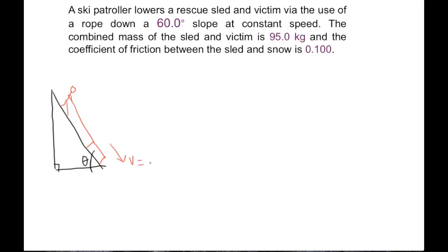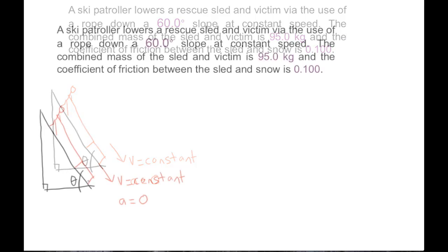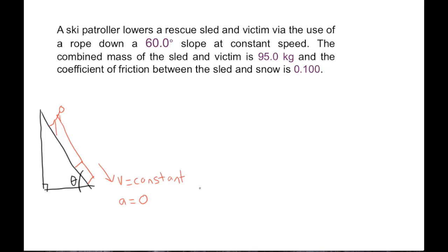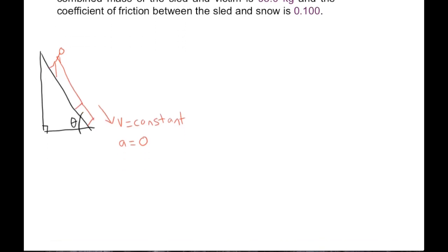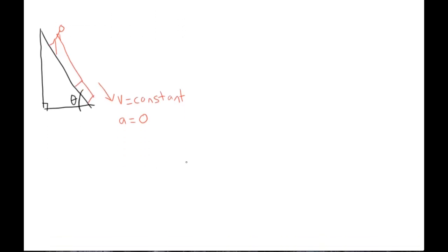The velocity is constant, which implies that our acceleration is zero. Our patroller is doing work on the rope, which is then doing work on the sled. There is a force of tension in this rope which acts on the sled. The sled is also subject to kinetic friction as well as gravity and the normal force.